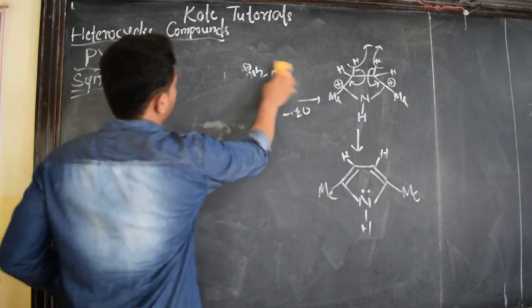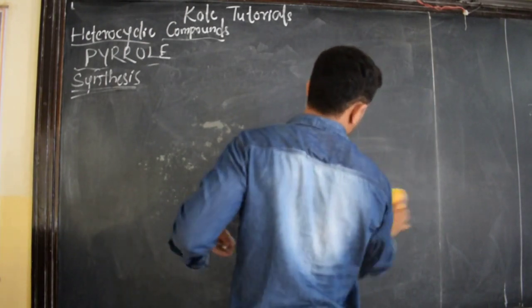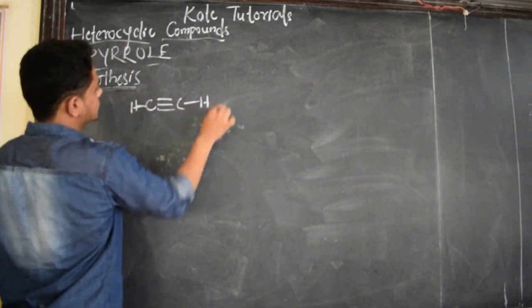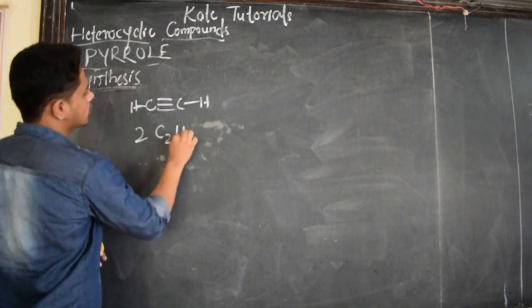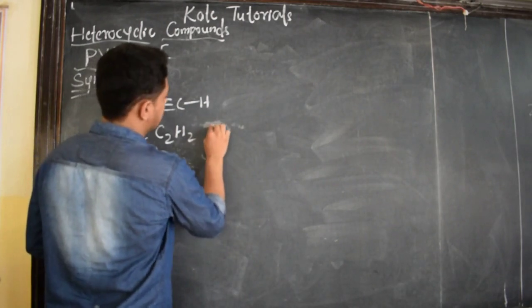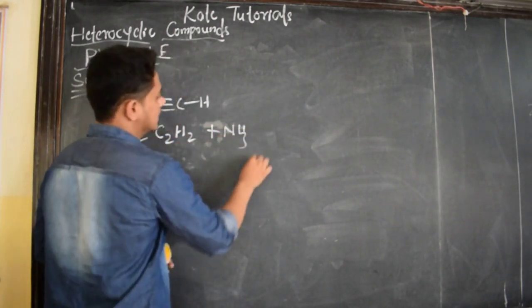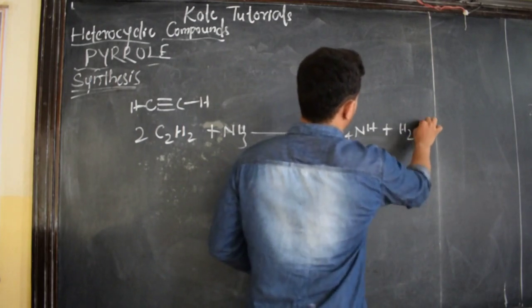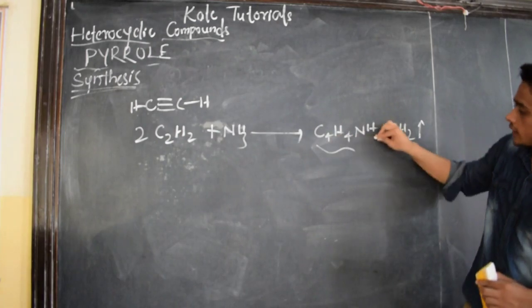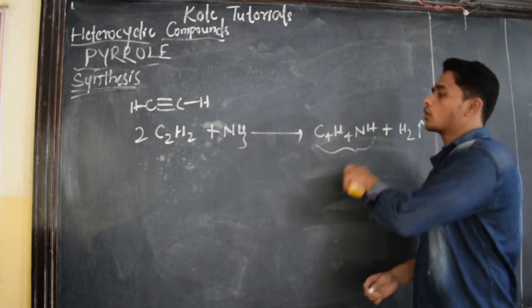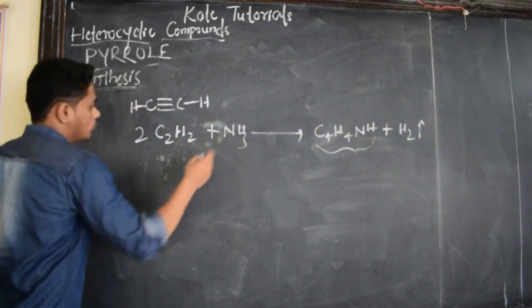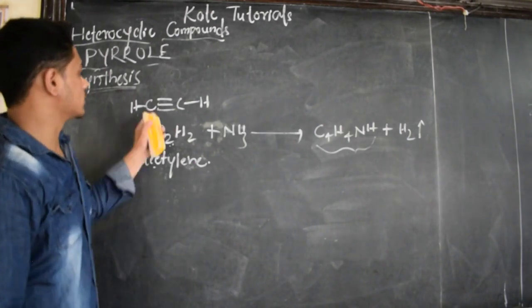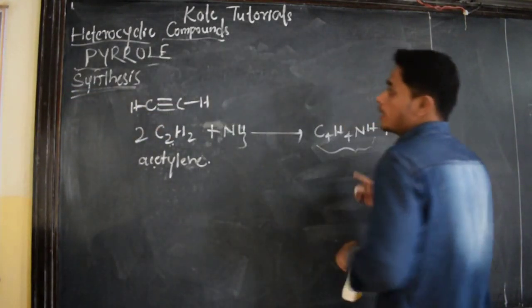And I have two more synthesis. That is from acetylene. We know the structure of acetylene. Acetylene is alkyne. The structure of acetylene is like this. If we take two moles of acetylene, that is C2H2, then in presence of ammonia, if we react it, if we heat it, we get C4H4NH plus hydrogen will be liberated. That is nothing but synthesis of pyrrole. So we can synthesize pyrrole from acetylene. Two moles of acetylene with one mole of ammonia. Acetylene structure is this one. Here the carbon is sp hybridized. And this is our pyrrole.